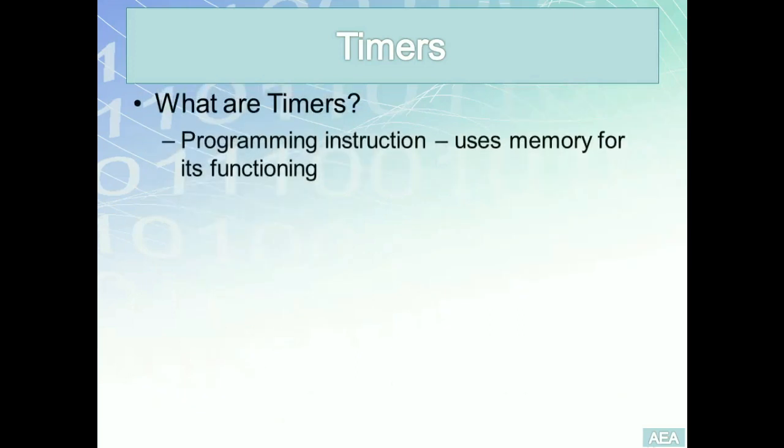Timers are internal programming instructions that use memory for their functioning. In order to integrate a timer into our program, we need to allocate sufficient memory for it to function properly. This is done by creating tags with the proper data type for the timer. After this introduction, I'm going to run an example that shows the creation of this tag and how we can integrate a timer into our program.